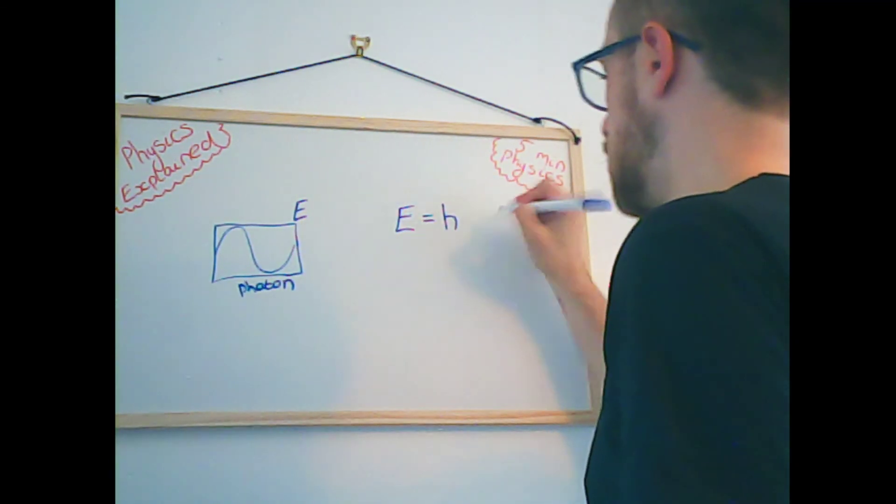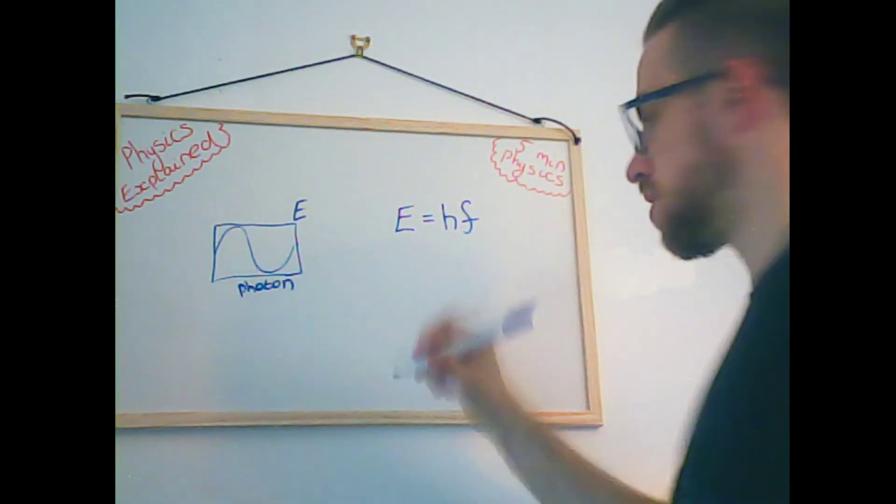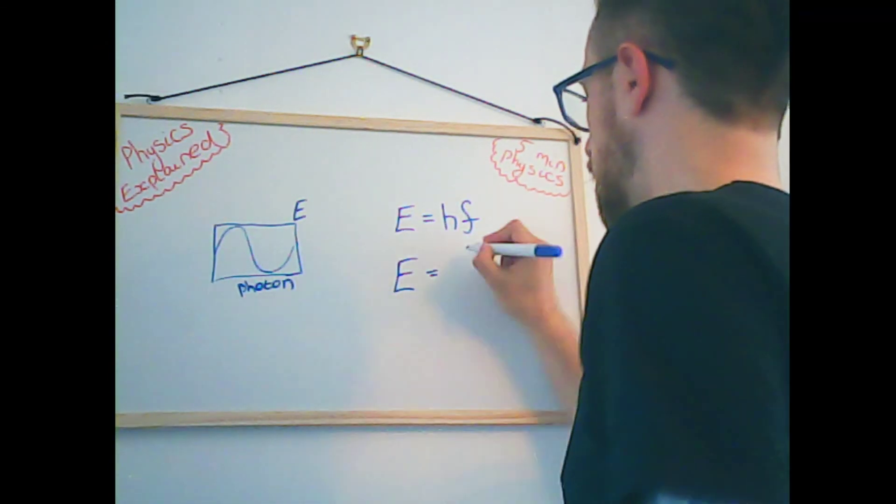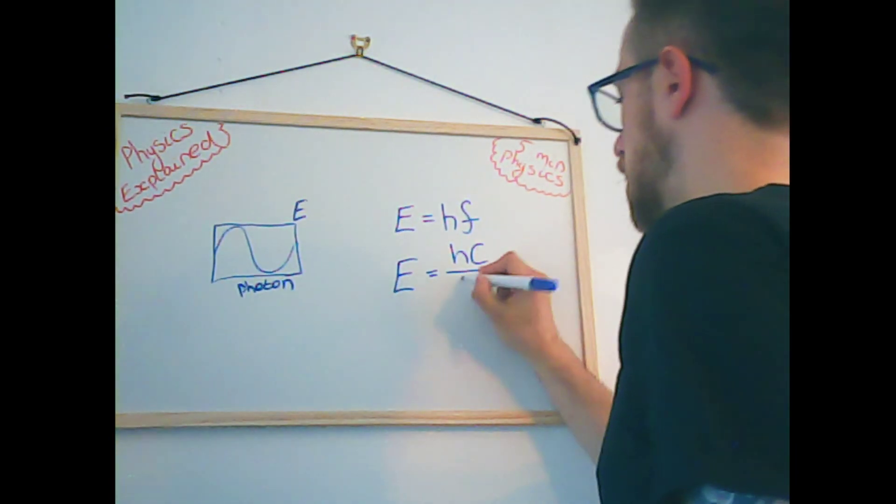So we have Planck's constant, h, and the frequency, so the energy is directly proportional to the frequency. And then we have our Planck's constant again, our speed of light constant, and our wavelength.